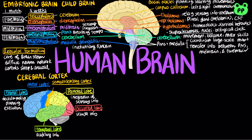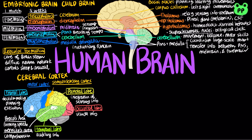Studies of brain activity have mapped areas responsible for language and speech. Broca's area is responsible for forming speech, while Wernicke's area is responsible for comprehending language.